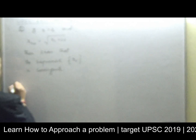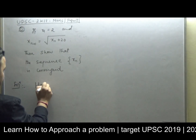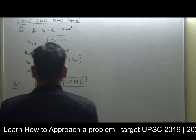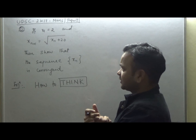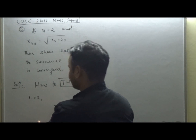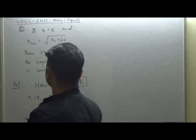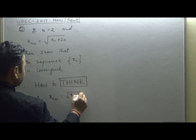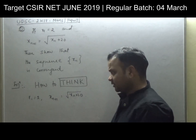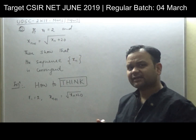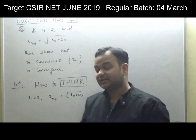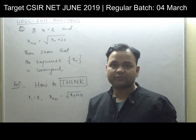So let's understand how to approach this kind of question. How to think about it? There are two or three most important things to recall. What is given? You have given me that x₁ = 2 and x_{n+1} = √(x_n + 20). On that basis, I have to show whether this sequence is convergent or not. When there is a subjective part, how should you approach it? There are many procedures.